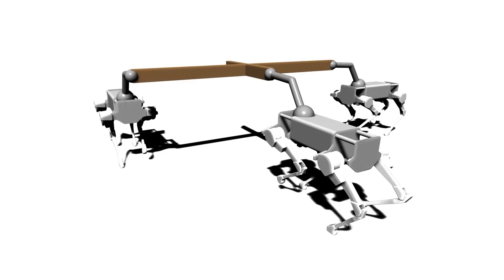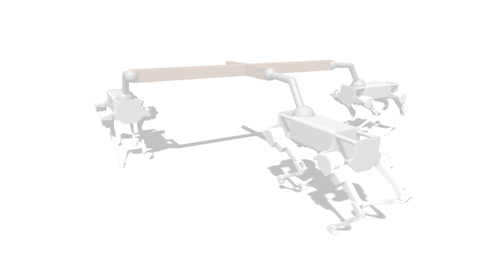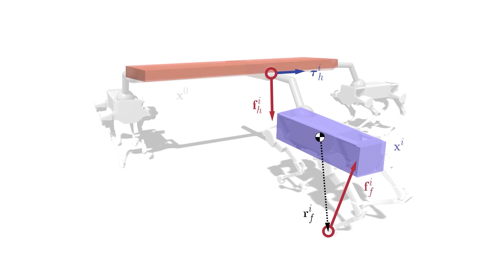To make our centralized implementation computationally tractable, we capture the dominant dynamics of each robot adopting the widespread single rigid body model. We approximate each robot as a lumped mass with state x superscript i. Each robot has two inputs per leg: the position of the foot with respect to its center of mass and the corresponding ground reaction force. Each robot's arm is also associated with two inputs: a manipulation force and a manipulation torque respectively. Finally, the manipulated object is exactly represented as a single rigid body with state x superscript zero.